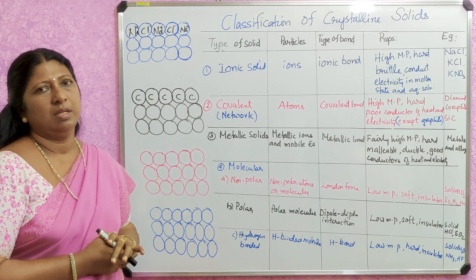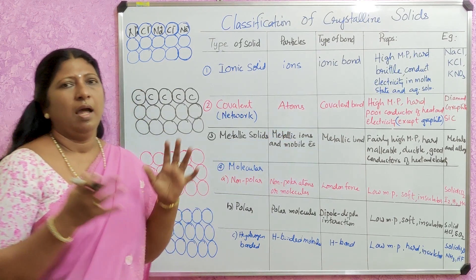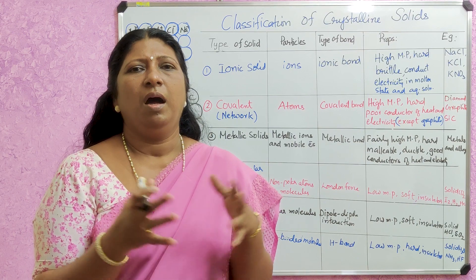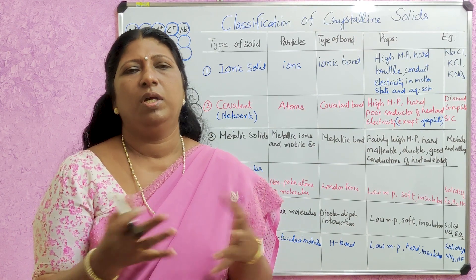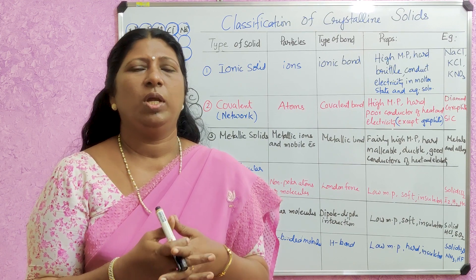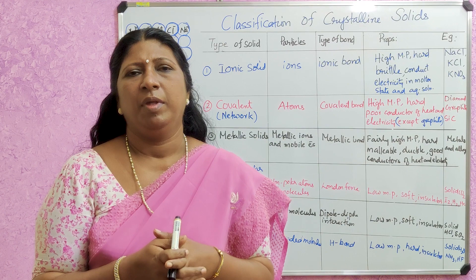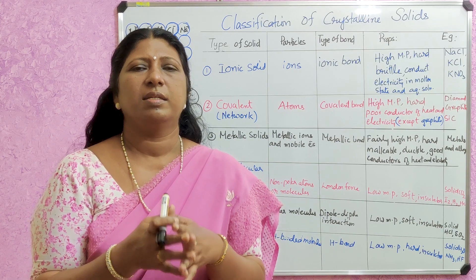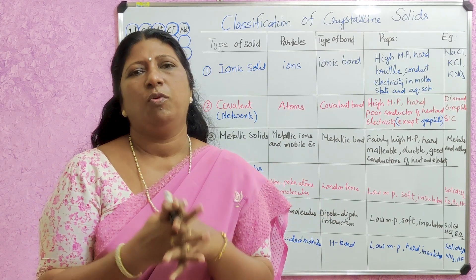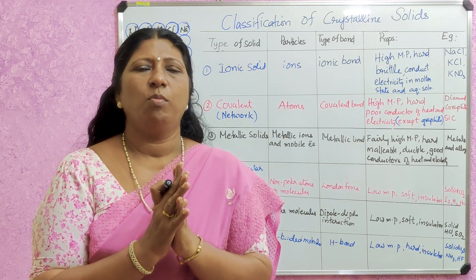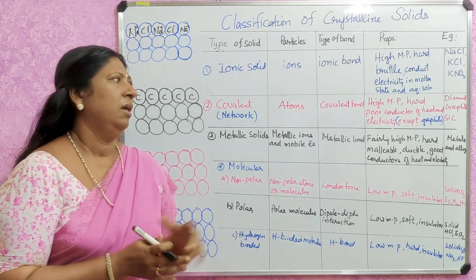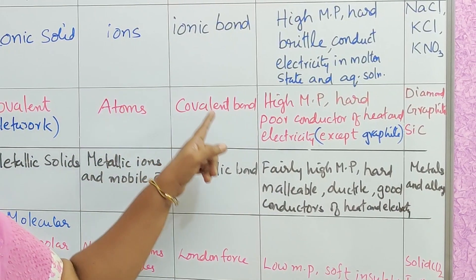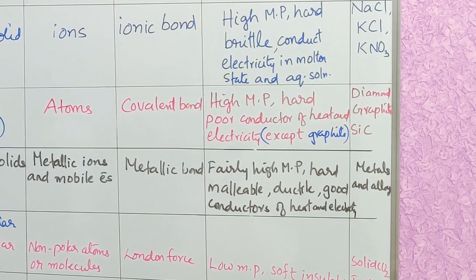The constituent particles are atoms, and the atoms share electrons with each other. That sharing results in a force of attraction called a covalent bond. So in network solids, the particles are atoms and the bond is called covalent bond.